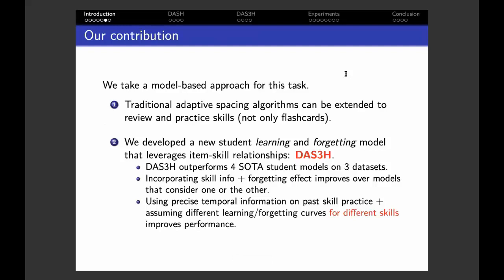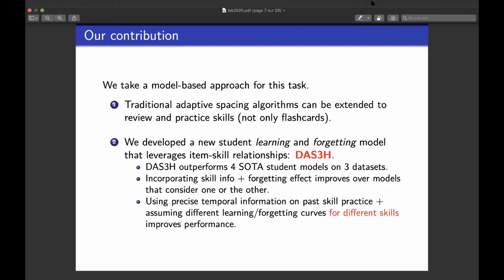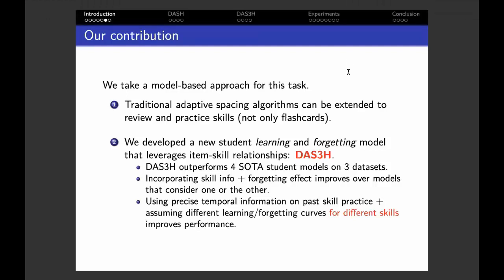In this article, we argued that traditional adaptive spacing algorithms can be extended to review and practice skills, not only simple flashcards. We also developed a new student learning and forgetting model that leverages item-skill relationships, and we coined this model DAS3H. We showed that our new model outperforms four other state-of-the-art student predictive models on three educational datasets. Please note that we are talking about model predictive performance, meaning how well a model is able to accurately predict future student outcomes based on her past study history. Our experimental results suggested that incorporating both item-skill relationship information and forgetting effects within the model structure improves over models that consider one or the other.